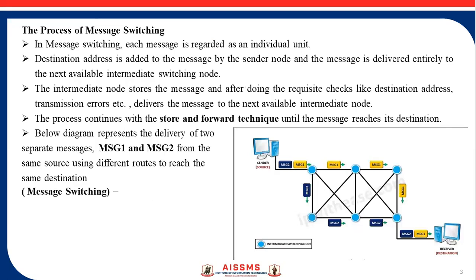The process of message switching: each message is regarded as an individual unit — each message sent by the sender is considered a complete unit. The destination address is added to that message before sending. The sender adds the destination address and the message is delivered entirely to the next available intermediate switching node. The intermediate node stores the message and after doing the requisite checks like destination address and transmission error, delivers the message to the next available intermediate node. This process continues using store and forward techniques until the message reaches its destination.